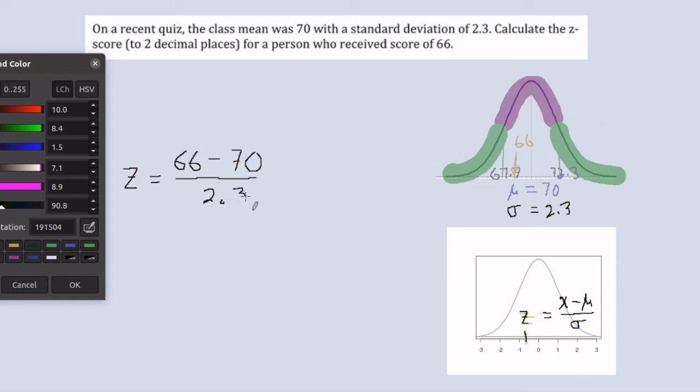The z-score is actually telling you how many standard deviations a particular value is away from the mean. So it's just going to be that value minus the mean divided by the standard deviation.